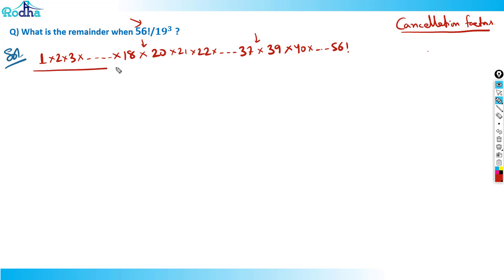This is 56 factorial. What is missing here? 1×19 is missing and 1×38 is missing. Basically that number, I have cancelled out. A 19 is left here and 19 square is my cancellation factor. So 1 to 18, then 20 to 37, and then 39 to 56 divided by 19 square. This is the question. 1 to 18 will become 18 factorial.